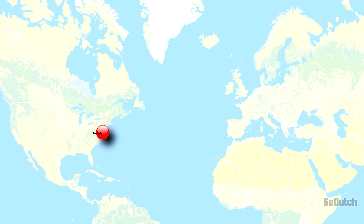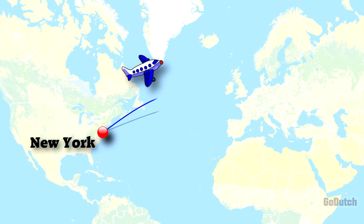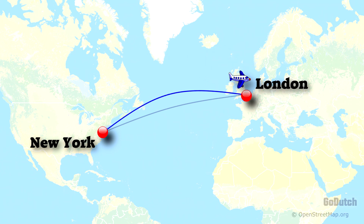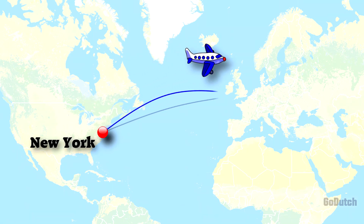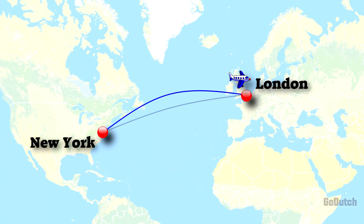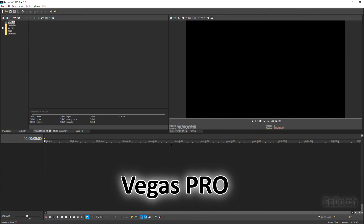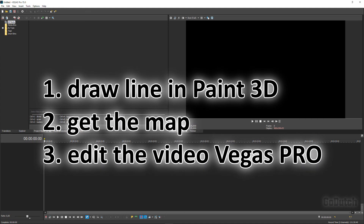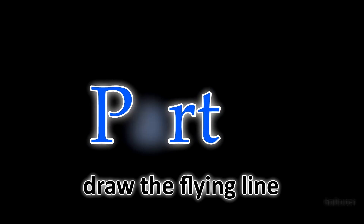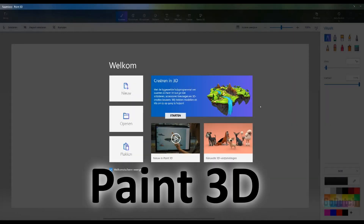Welcome to this tutorial where I'm going to show you how to make a flying map — a map where you'll be flying from New York to London. I'll show you how to put that line on the map and how to fly with a little aircraft. We're going to do the editing in Vegas Pro and first draw a line in Paint 3D.